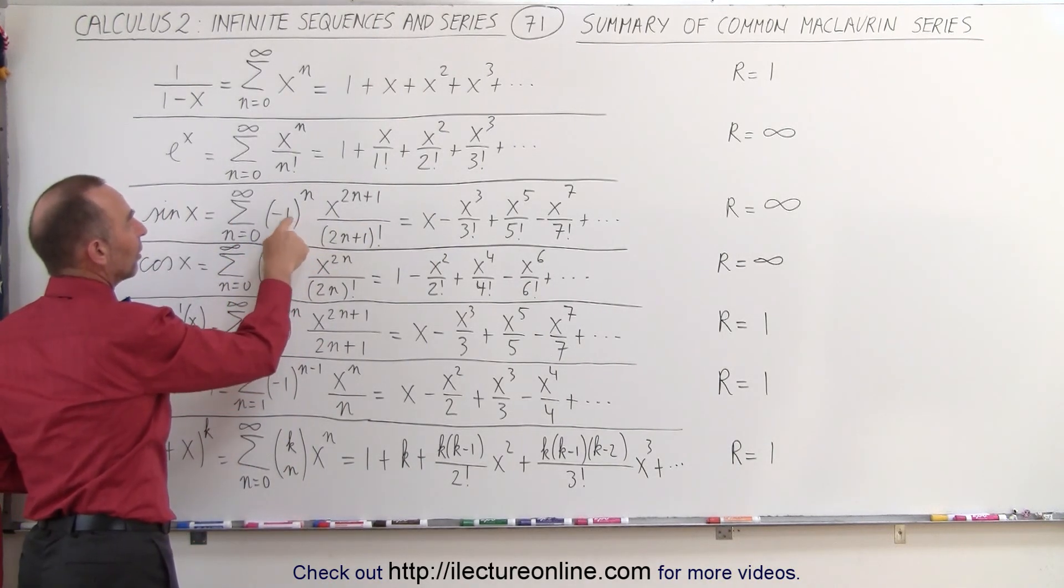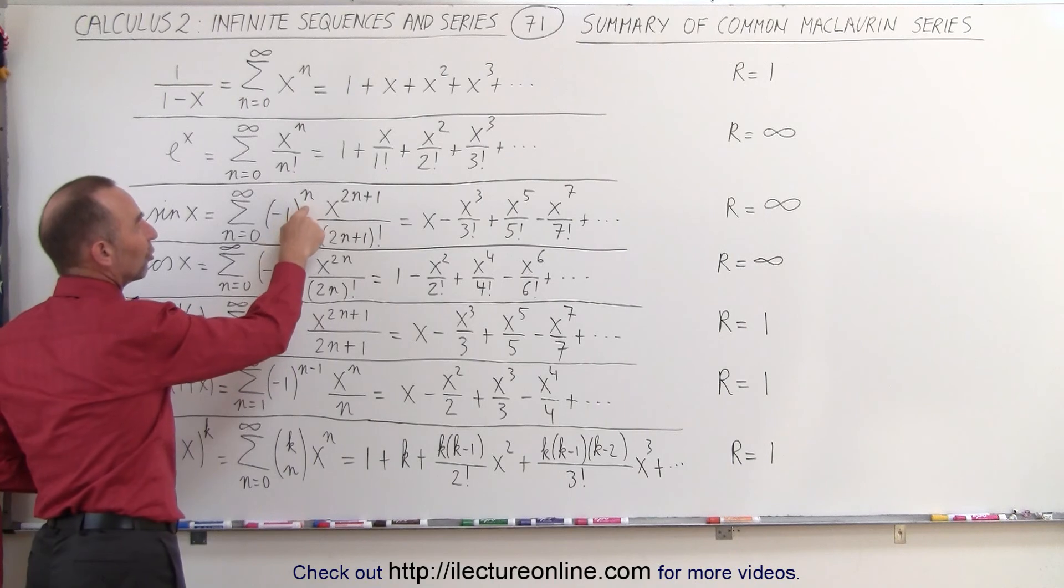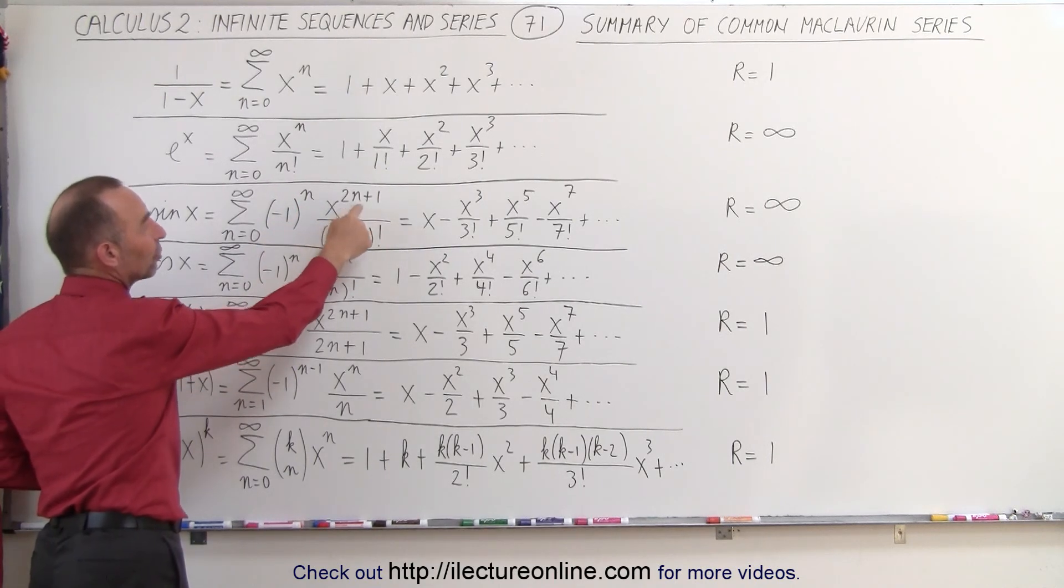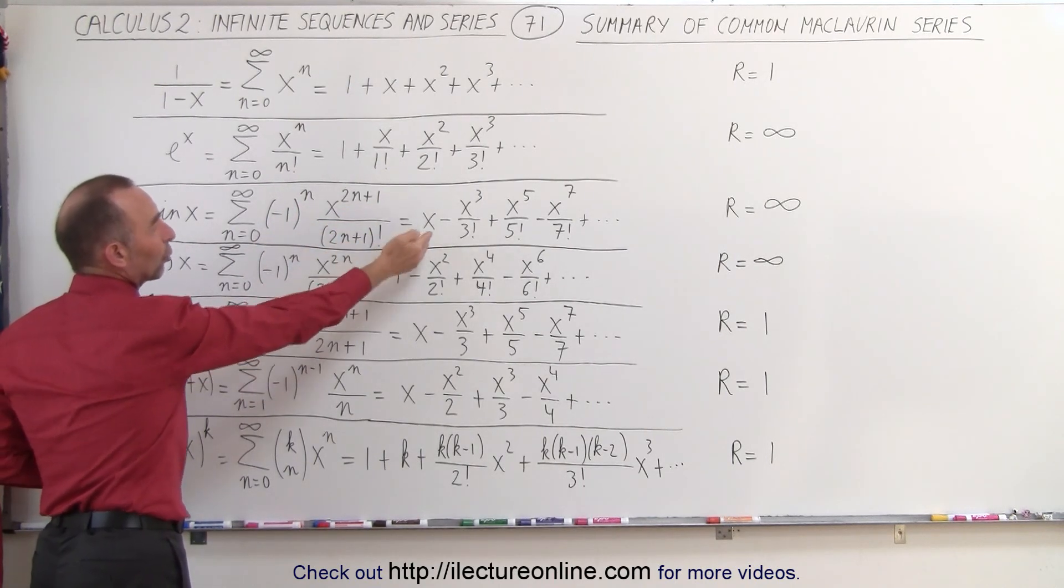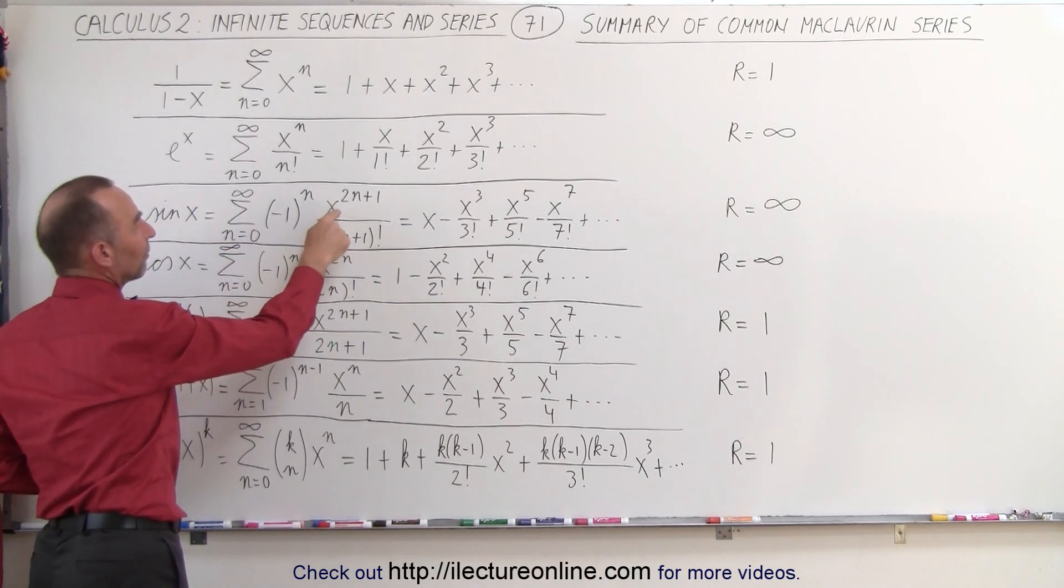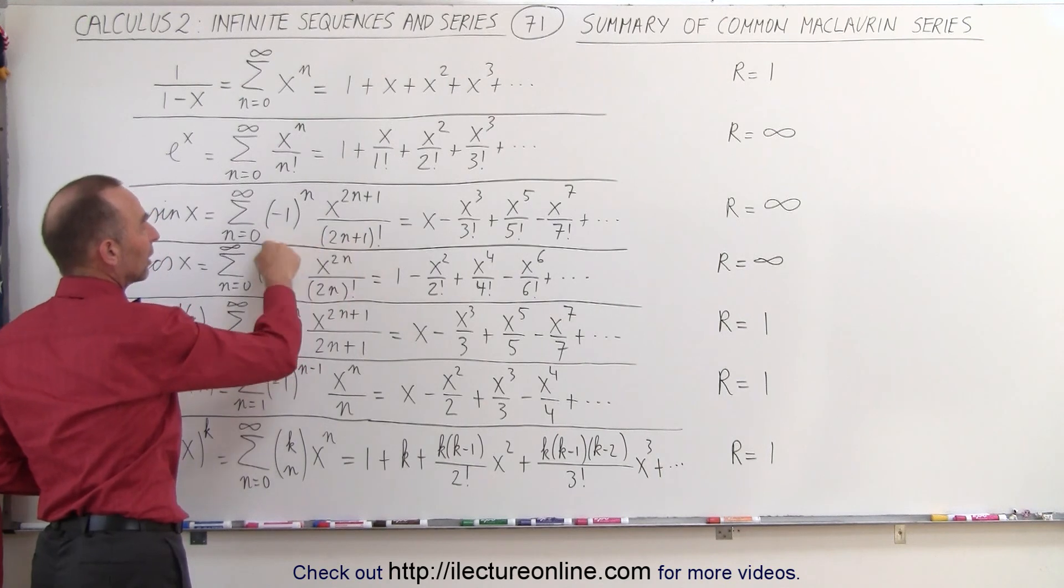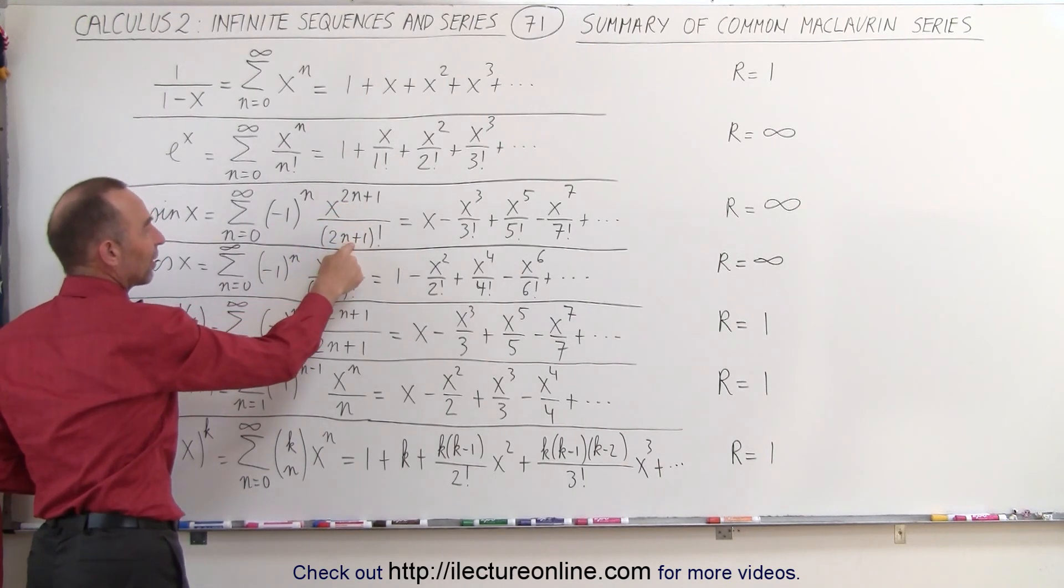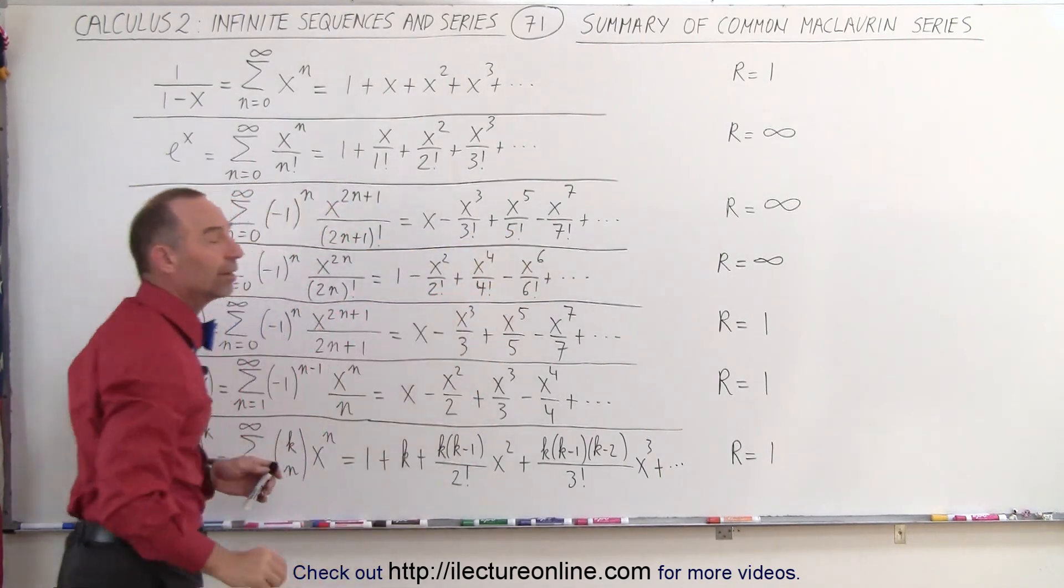Notice that ends up with minus 1 to the 0 power, which is 1, times x to the first power divided by 1 factorial, so we end up with x. The third term, now n equals 1, you have x to the third power divided by 3 factorial, and then x to the fifth power divided by 5 factorial with the alternating signs.